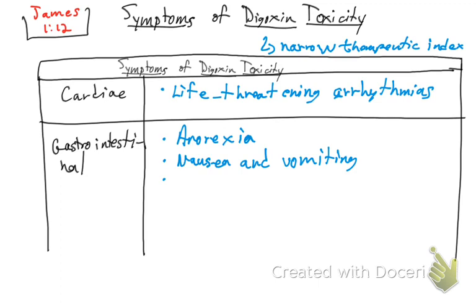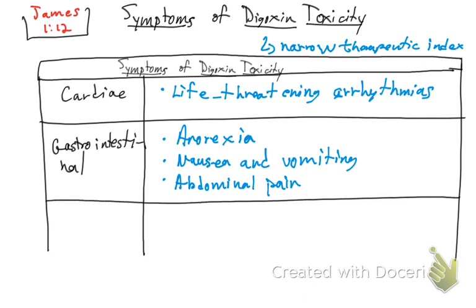Remember that when you are vomiting, you are losing protons — you're losing acid. So in the blood gases, you're going to be in alkalosis because you are losing acid. And the patient is also going to have abdominal pain because of all those things — vomiting, nausea, and anorexia. Remember that pain is usually due to lack of oxygen.